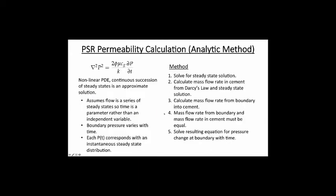To make the data comparable, we calculated permeability — specifically point source reference permeability — in two different ways. One approach is type curve matching, where you solve the correct flow equation for porous media. Since we have gas, I need the compressible form, which is a nonlinear PDE. To get an approximate solution, I'm using the continuous succession of steady states approach.